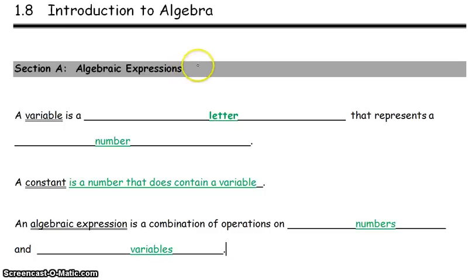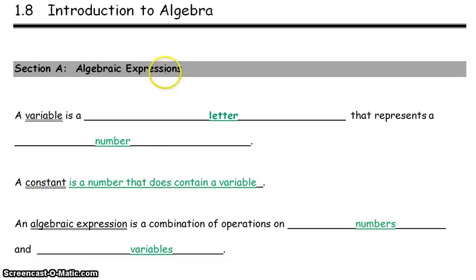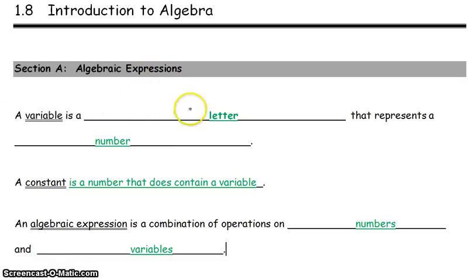Hello class. We are on section 1.8, introduction to algebra. Section A is algebraic expressions. We have a couple definitions here. A variable is a letter that represents a number.